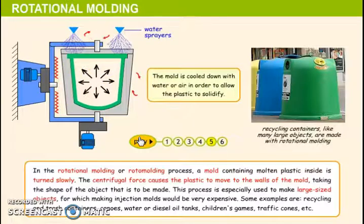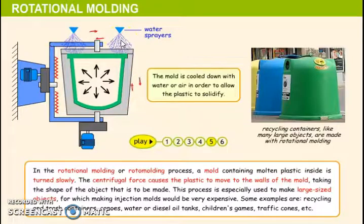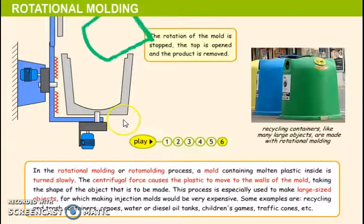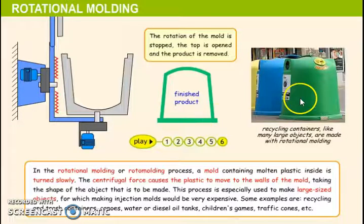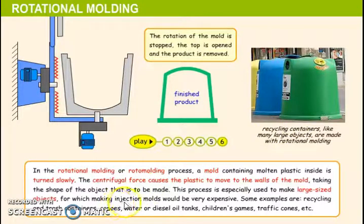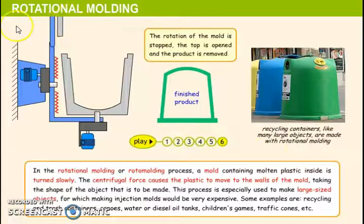The mold is cooled down with water or air in order to allow the plastic to solidify. The rotation of the mold is stopped, the top is opened, and the product is removed. This process is especially used to make large-sized objects, like recycling containers. Using injection molds would be very expensive for these very large objects, so this technique is more appropriate.